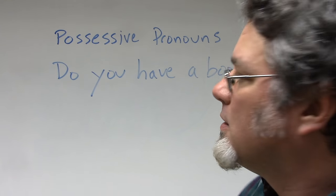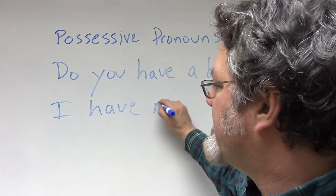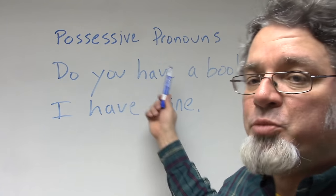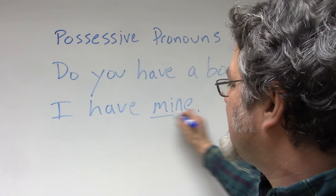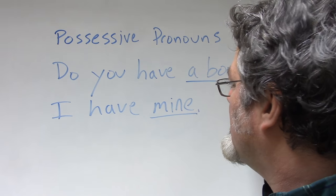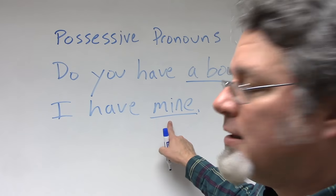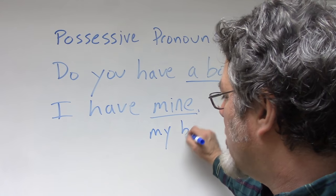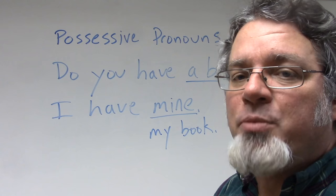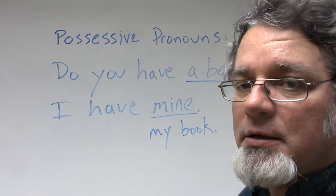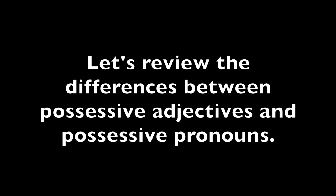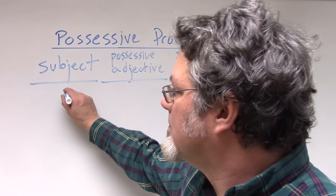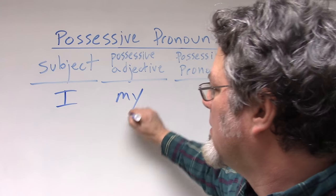Do you have a book? I have mine. If I make these two statements, the possessive pronoun represents 'book.' Instead of saying 'mine,' I could say 'I have my book.' So 'mine' represents 'book.' 'My' is the possessive adjective and 'mine' is the possessive pronoun.